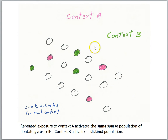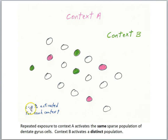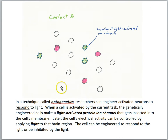Using a simple diagram, we can visualize cells in the dentate gyrus. Due to pattern separation, when the animal is placed in context A, a certain population of cells becomes active — the pink ones. In context B, a different population of cells becomes active. It is just a fraction of the entire population that responds to a given context, but repeated exposure to context A activates the same sparse population, while context B activates a distinct population.